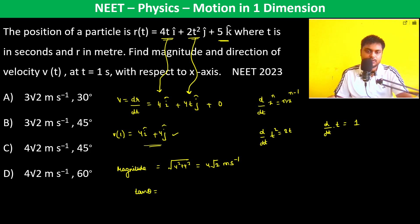For the angle, tan θ = 4/4, so θ = 45° with respect to the x-axis. Therefore, option C is correct.